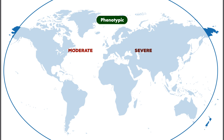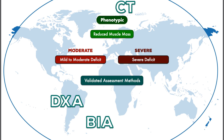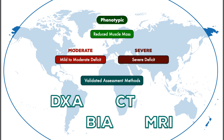The third and final phenotypic criteria is reduced muscle mass. Moderate malnutrition is characterized by a mild to moderate deficit, whereas severe malnutrition is characterized by a severe deficit. A significant aspect of this criteria is that the GLIM members are calling for validated assessment tools like DEXA, BIA, CT, and MRI. If none of these are available, calf or arm muscle circumference measurements should be used, in place of subjective assessment through visualization and palpation — a step forward since these measurement tools produce the most reliable results.